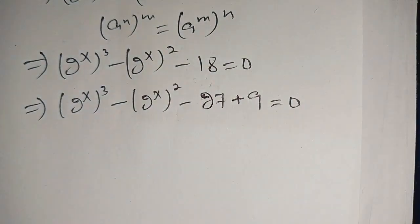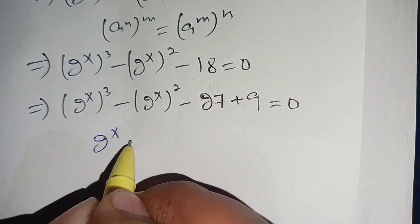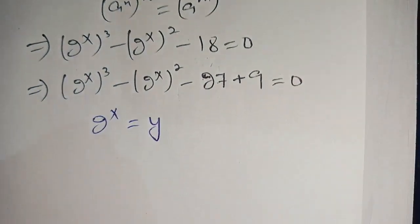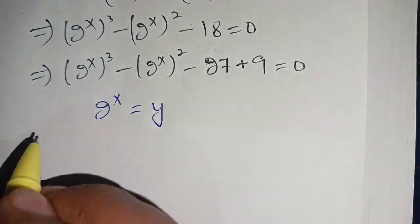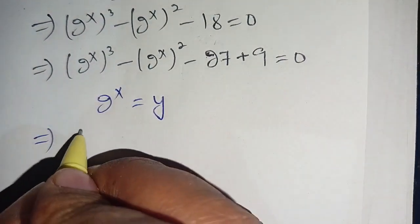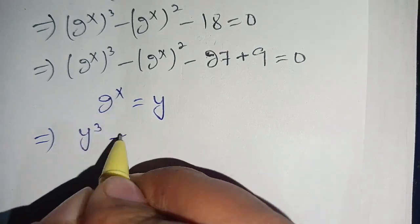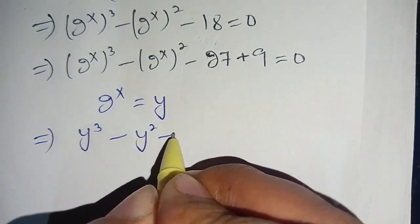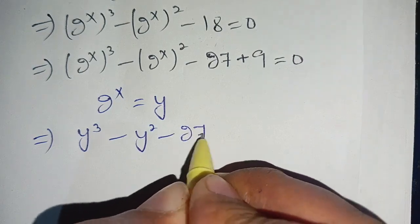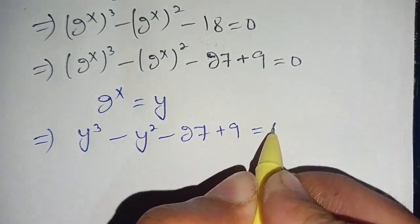Now in the next step let us consider 2 to the power x is equal to y. This equation will become y cubed minus y squared minus 27 plus 9 is equal to 0.